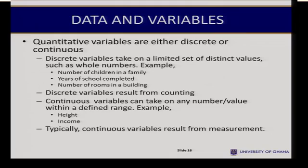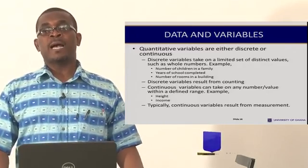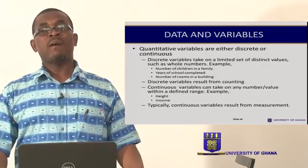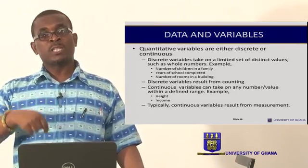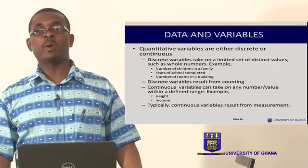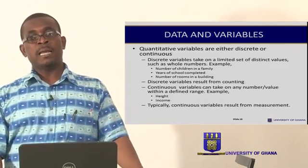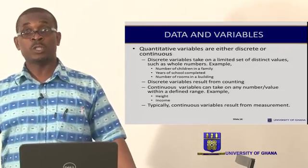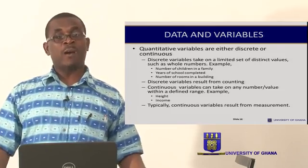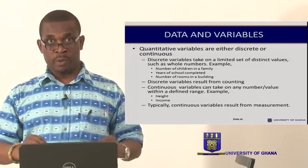Continuous variables, on the other hand, can take any number within a defined range. For example, the height of a person can fall between five and six feet, and between five and six feet you can find an infinite number of measurements within that range, because somebody could be 5.1 feet, but somebody else could be 5.11 feet, and yet a third person could be 5.111 feet. So you can find an infinite number of values within a given range. Continuous variables typically result from measuring.